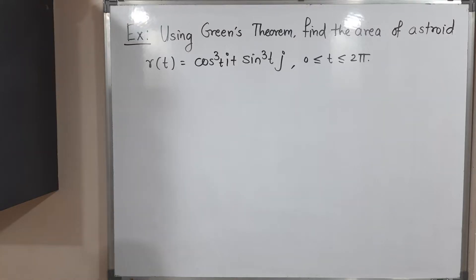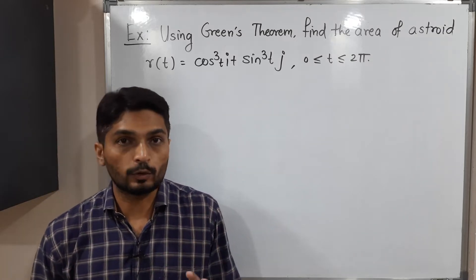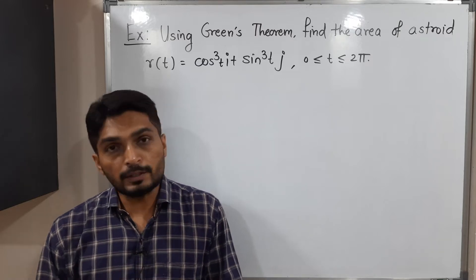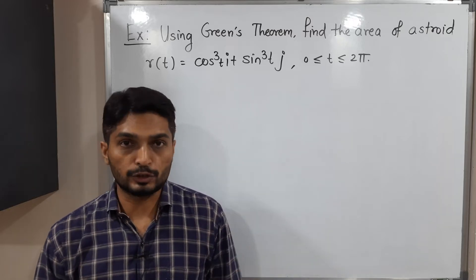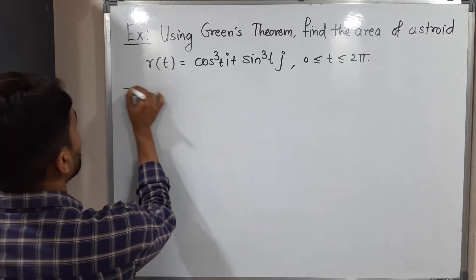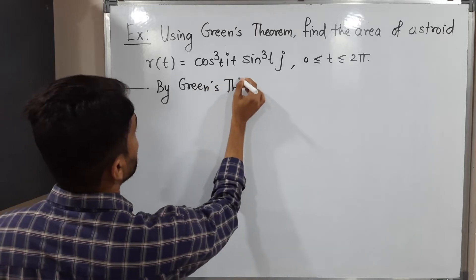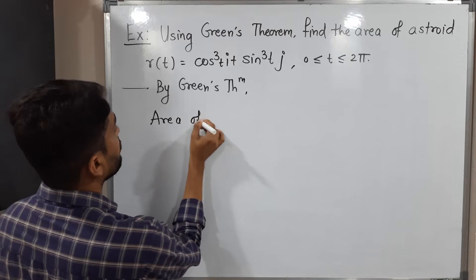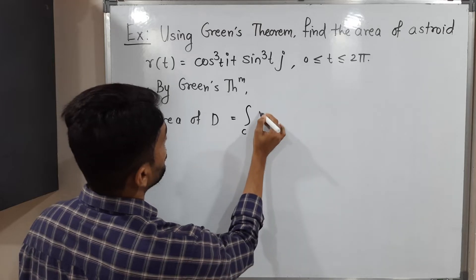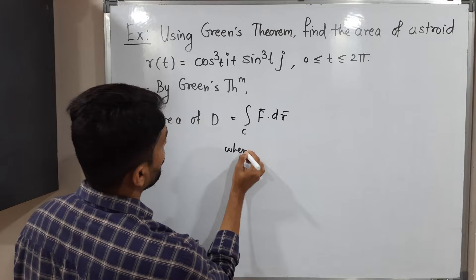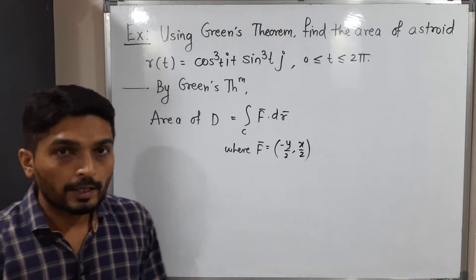In this example, using Green's theorem we have to find the area bounded by an asteroid — specifically the area of the interior part of the asteroid. In a previous video we already saw which formula Green's theorem gives us to find the area of a region. By Green's theorem, the area of region D is equal to the line integral over C of A-bar dot dr-bar, where A-bar equals (−y/2, x/2).